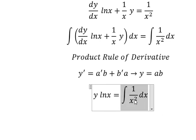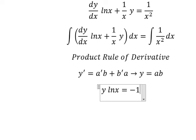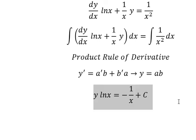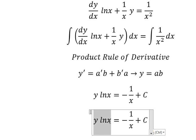For this one we have negative 1 over x. And I will put c. Now we divide both sides by ln x.